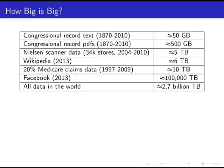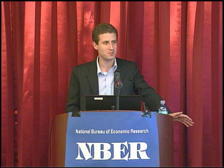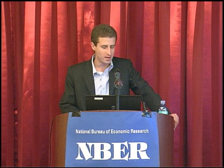For example, the text of the U.S. congressional record Matt and I have worked with is about 50 gigabytes — half a terabyte with PDFs. The Nielsen scanner data from 35,000 stores over five or six years is about five terabytes. All of Wikipedia is about six. The 20% Medicare claims sample is about 10 terabytes. Facebook is 100,000 terabytes, and all the data in the world is about 2.7 billion terabytes. At some point you can't just put it in working memory.